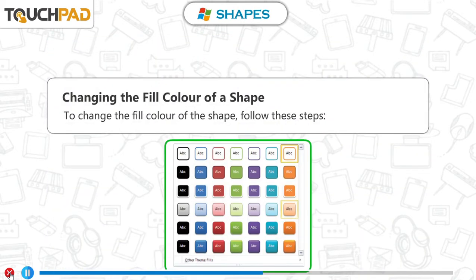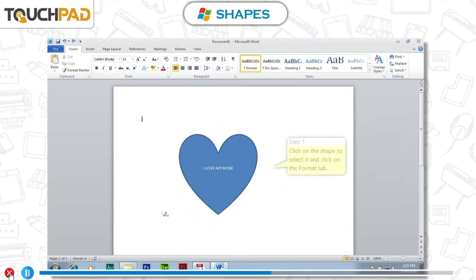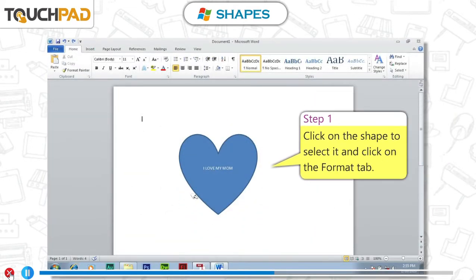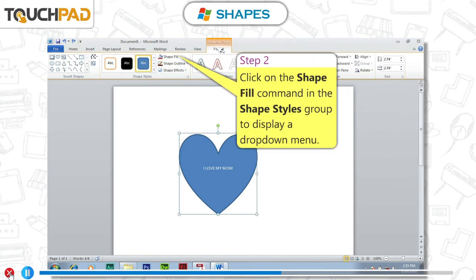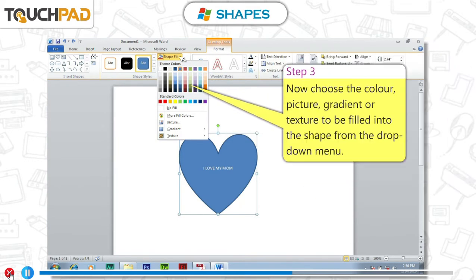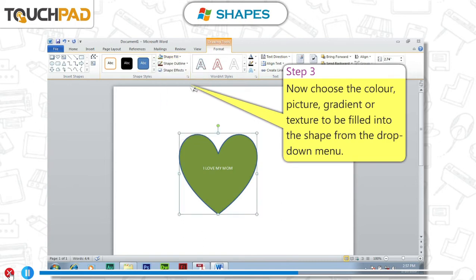Changing the fill color of a shape. To change the fill color of the shape, follow these steps. Step 1: Click on the shape to select it and click on the Format tab. Step 2: Click on the Shape Fill command in the Shape Styles group to display a drop-down menu. Step 3: Now choose the color, picture, gradient or texture to be filled into the shape from the drop-down menu.